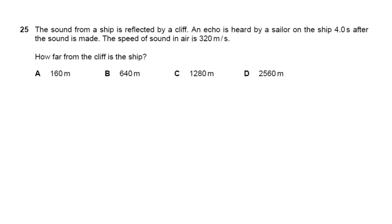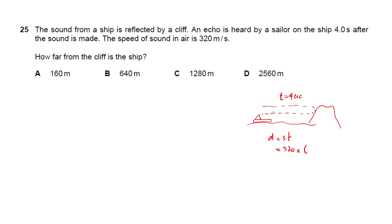Question 25: sound from a ship reflects off a cliff. An echo is heard 4 seconds after the sound is made. Speed of sound is 320 m/s. Total distance = 320 × 4 = 1280 m. Since sound travels to the cliff and back, the distance to the cliff = 1280 / 2 = 640 m. Answer: B (640 m).